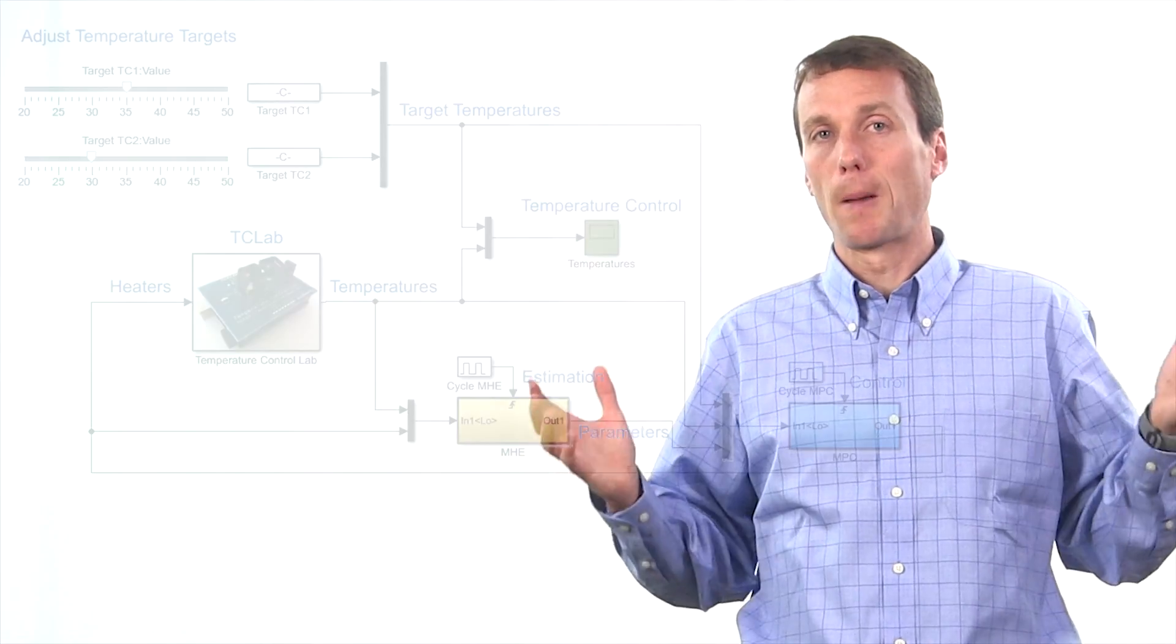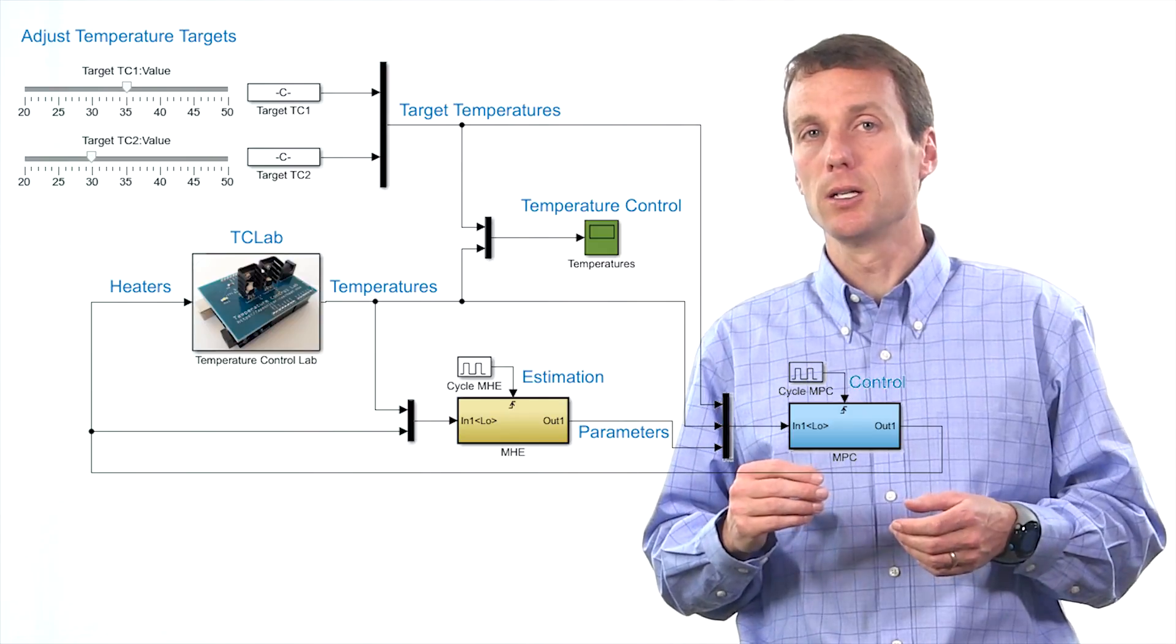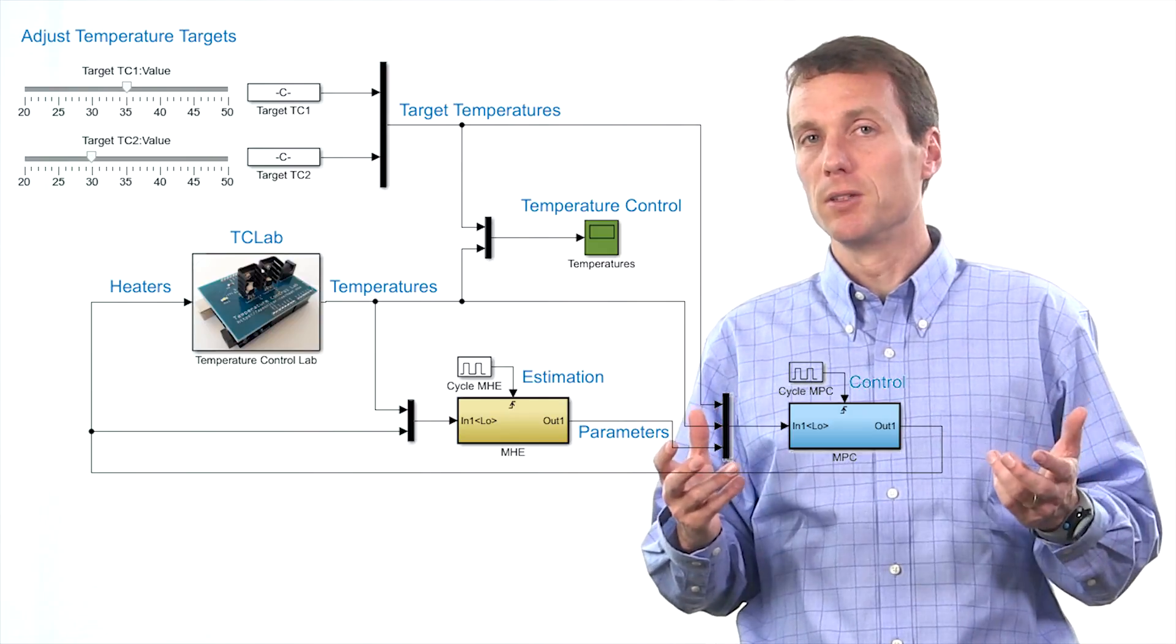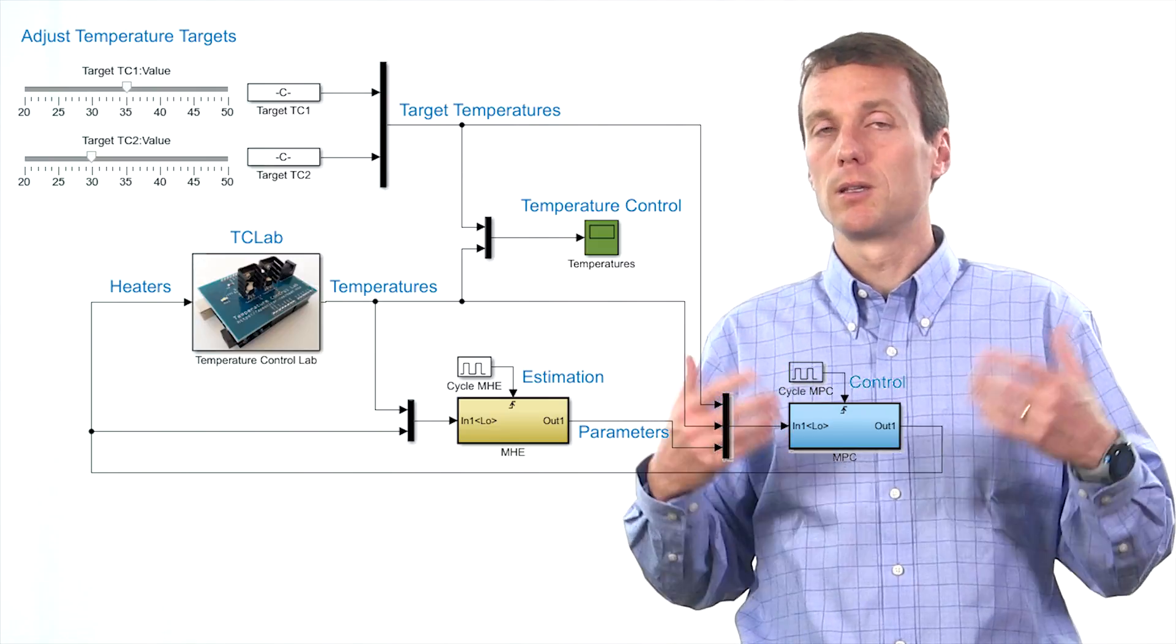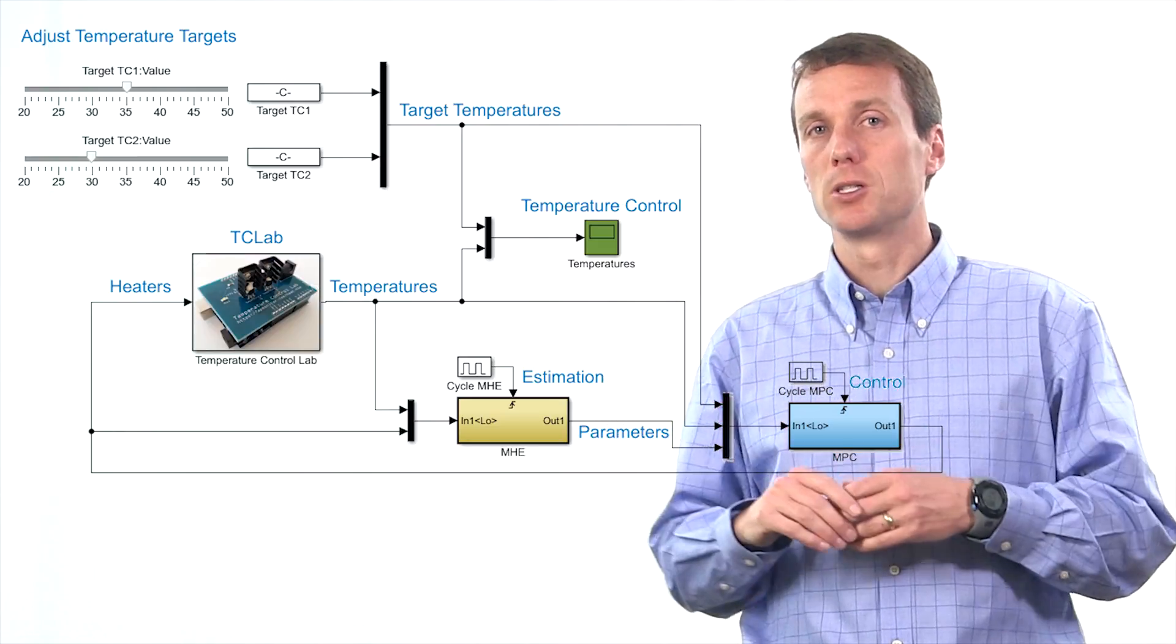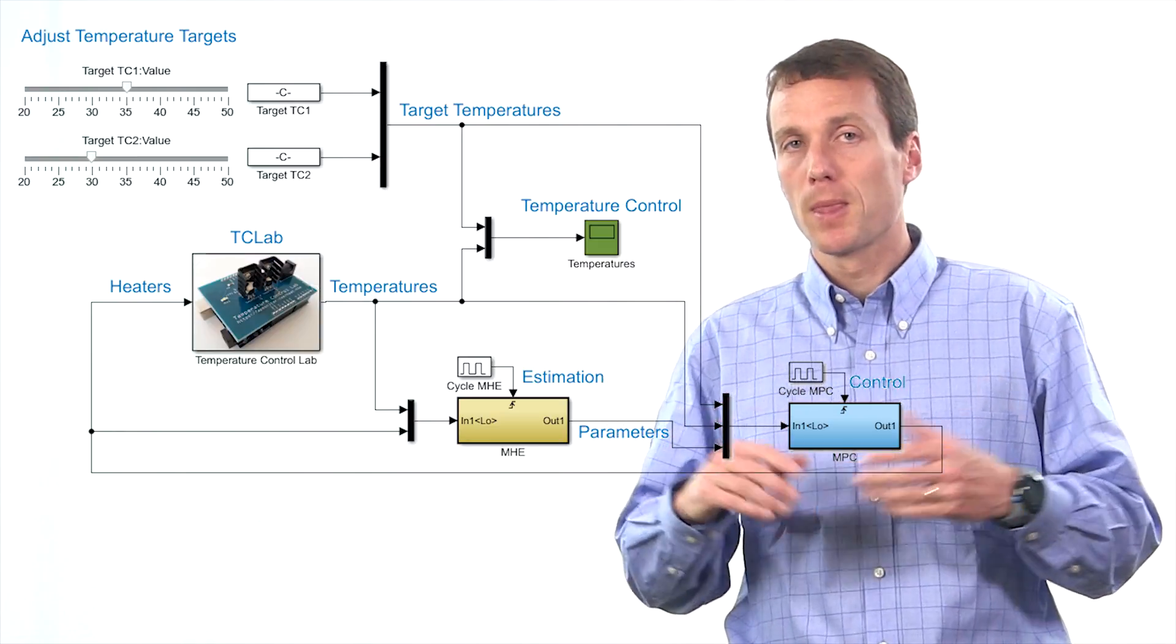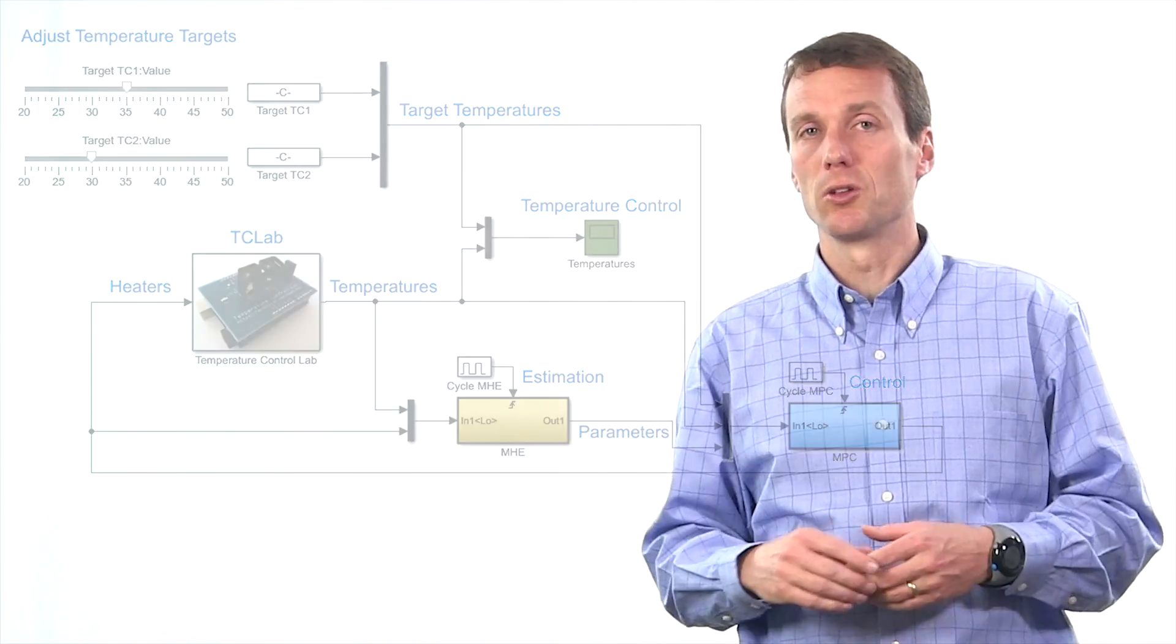As a final step, we're going to combine the estimation and the controller into a single application. That's going to be the culmination of this lab for advanced control methods where it updates the parameters based on the measurements, feeds those updated parameters to the model predictive controller, and then the model predictive controller produces new heater values that control the system.